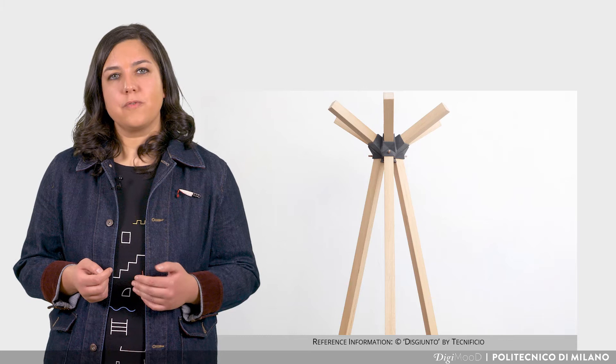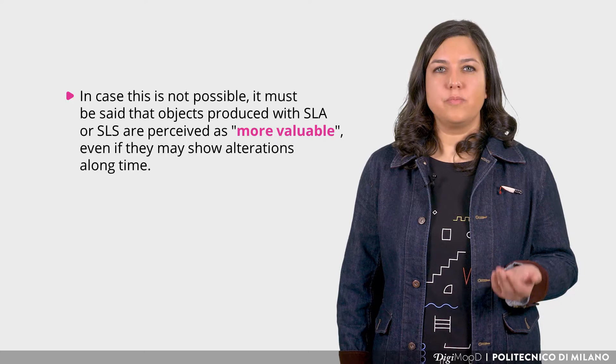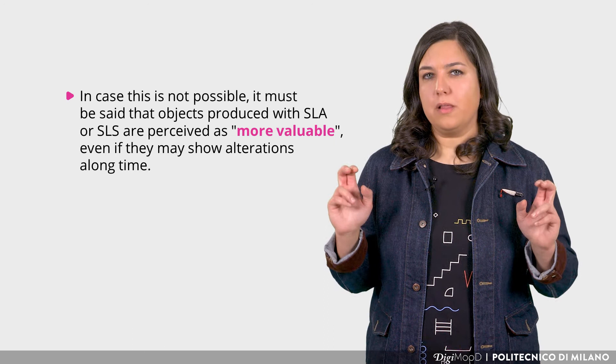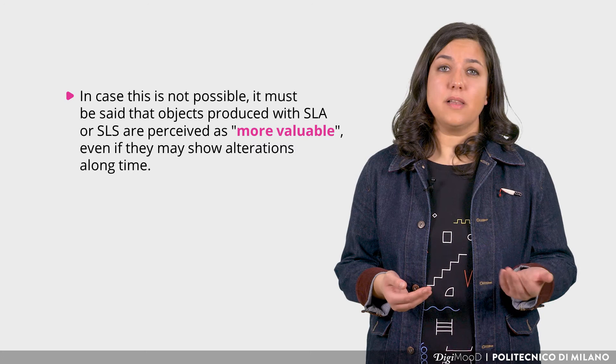The choice of material and final finish also influence the appearance and perceived value of the final object. The overlapping of layers is generally visible in objects built with FDM 3D printers, but you can conceive geometries able to hide or even enhance them. When this is not possible, objects produced with SLA or SLS are perceived as more valuable. However, SLA outputs may become more fragile if exposed to sunlight for long periods, and SLS prints may show color alteration on parts in contact with the human body, since the paint is usually applied during post-production.